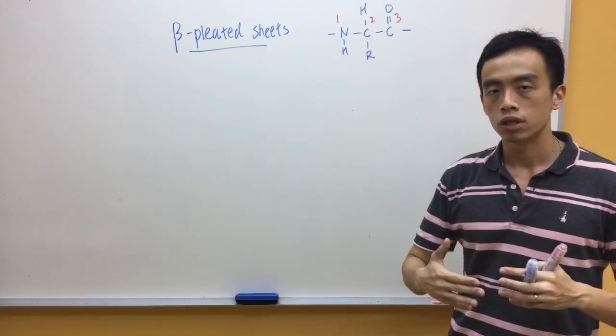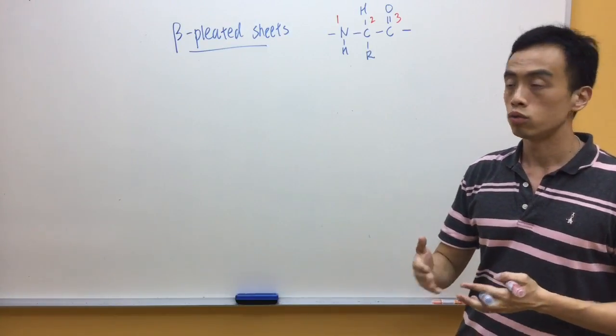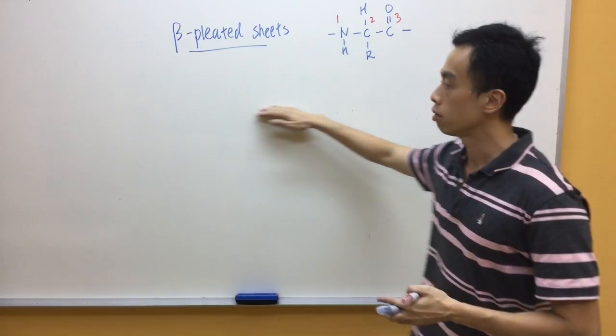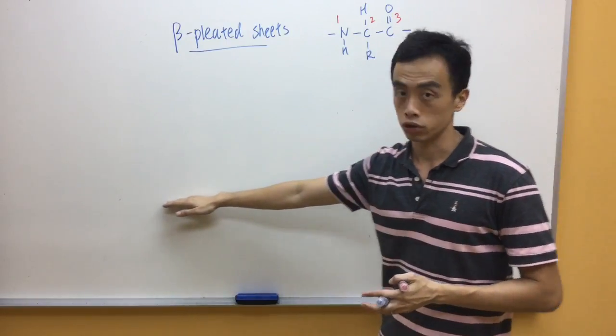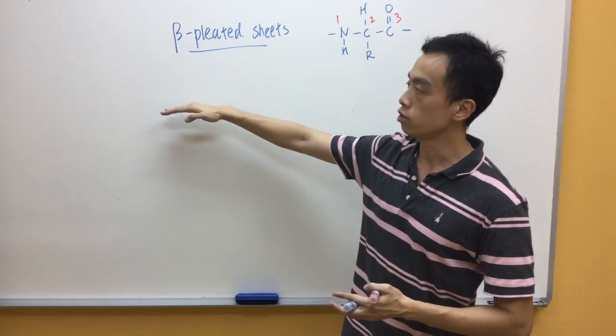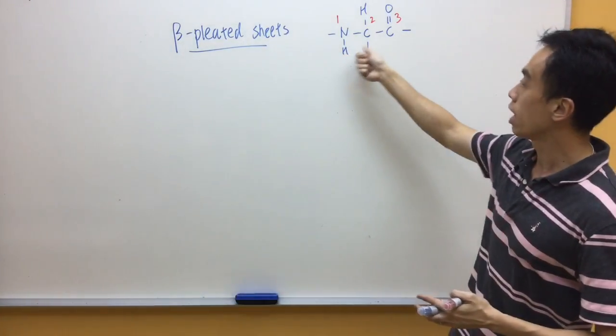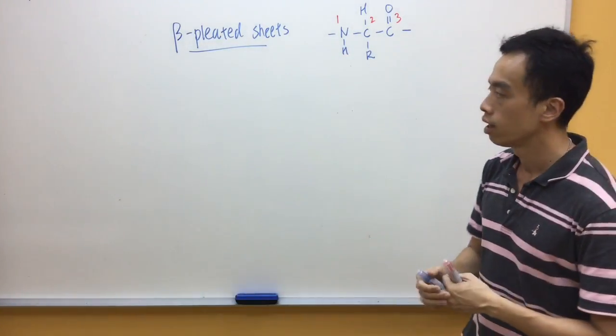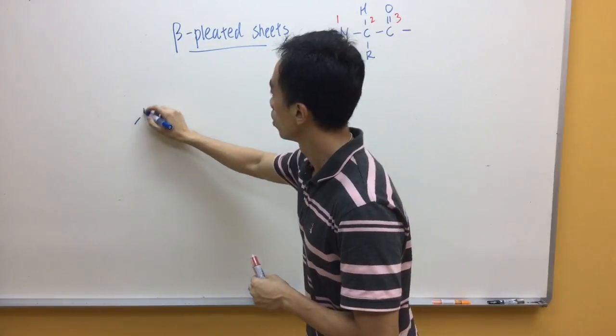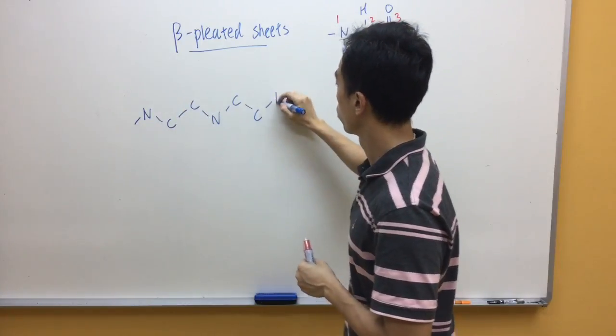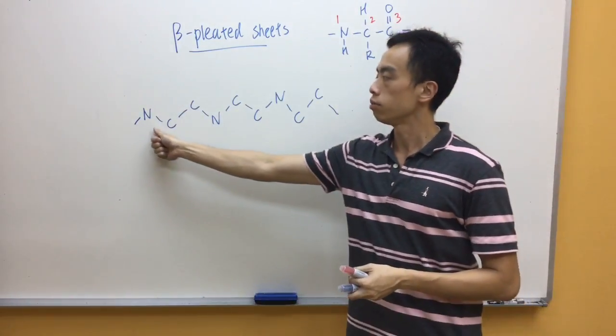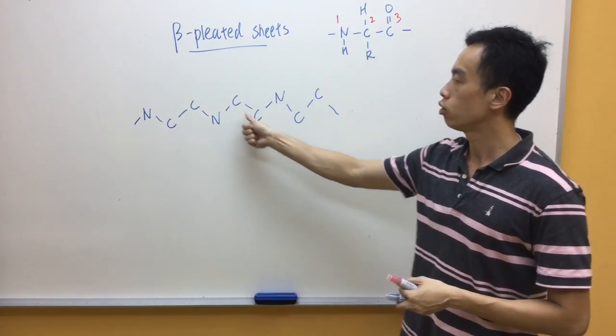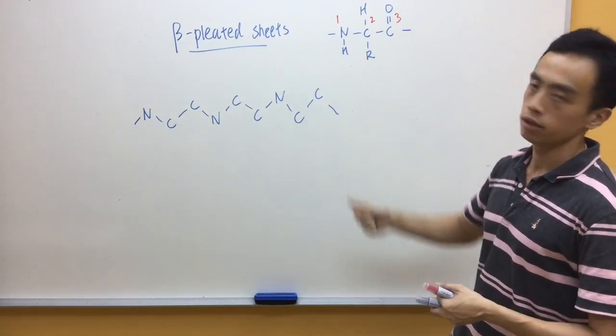Now, in order for us to draw the beta-pleated sheets, we need to draw two strands of our primary structure here. In this case, I need to draw this amine R group acid three times, but in a zigzag way. So, notice what we have is our amine R group acid, amine R group acid, amine R group acid.